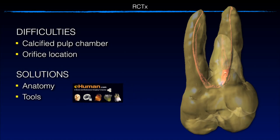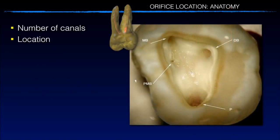I recommend ehuman.com — I think that's a great source of information and everybody should check it out. Finding canals is closely related to understanding how many canals you're supposed to find in each tooth. Thinking that mandibular incisors, canines, and mandibular premolars have one canal is wrong, because you'll find a second canal on the lingual of these teeth 25–30% of the time.